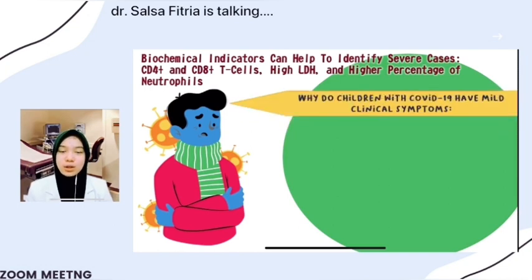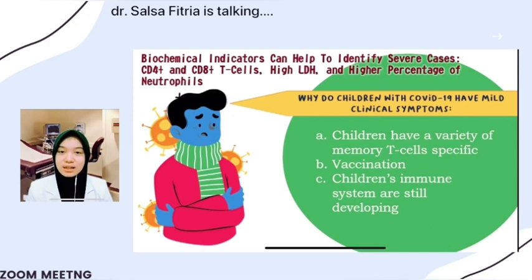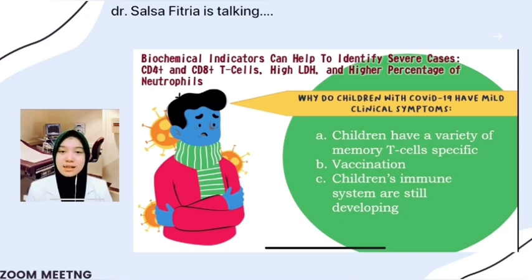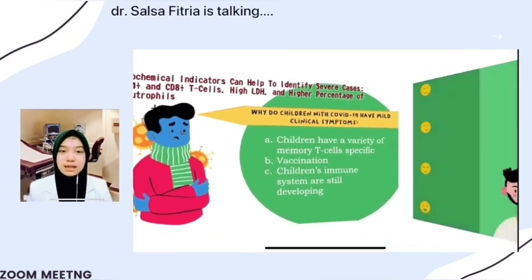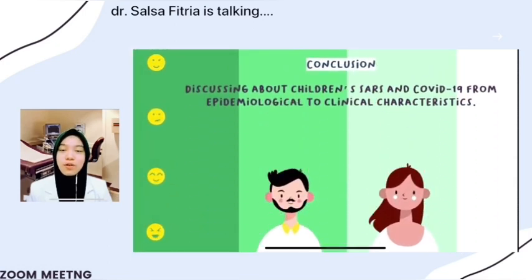Why do children infected with COVID-19 have mild clinical symptoms? First, children have a variety of memory cells specific to viruses from frequent exposure to various viruses in childhood. Second, vaccination helps the body to form protective immune responses. Third, children's immune systems are still developing. Additionally, a recent study found that anxiety, depression, and stress are common in young people during the COVID-19 pandemic, and further research is required to study the mental health of young children infected with COVID-19.